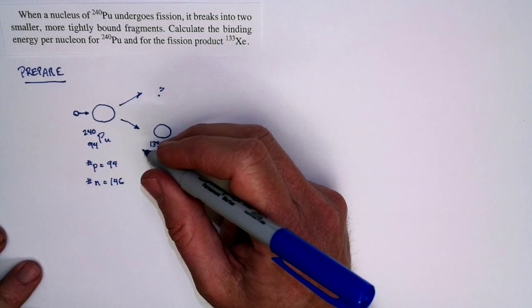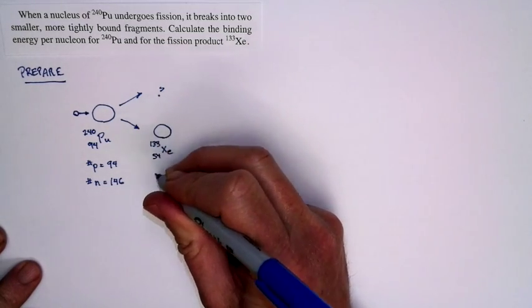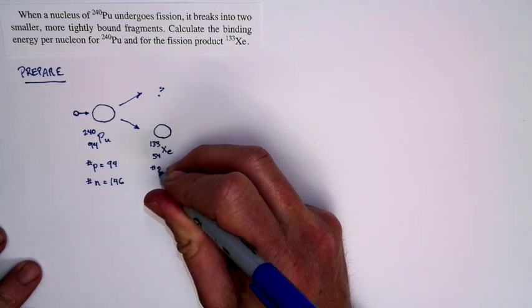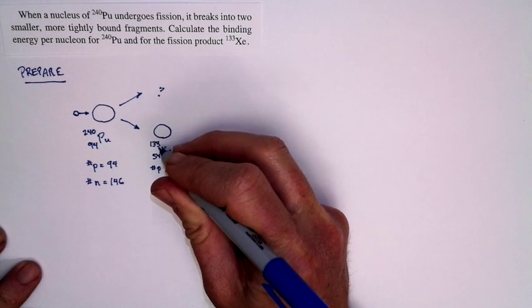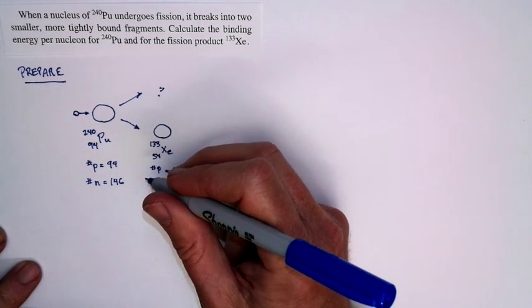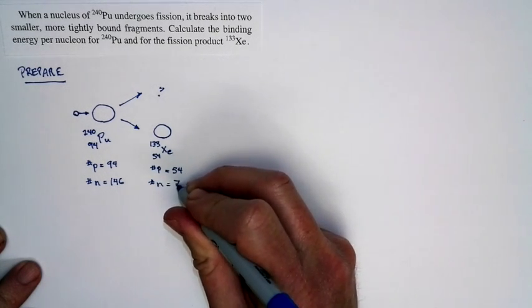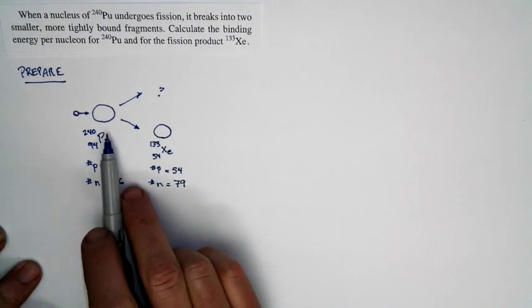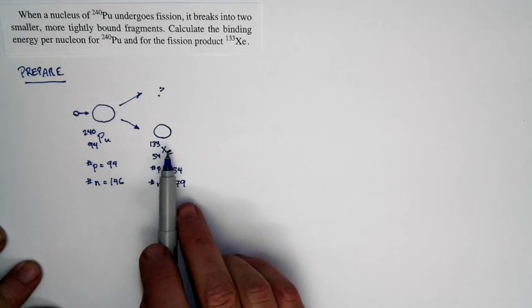Now, to be definite about this one, we know that xenon is atomic number 54, so the number of protons in this particular nucleus is 54. The number of neutrons is just the difference between these two, so the number of neutrons is 79. So plutonium splits into a couple of pieces, and this is one piece that it splits into.